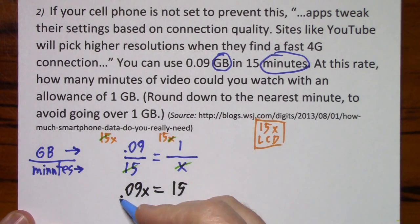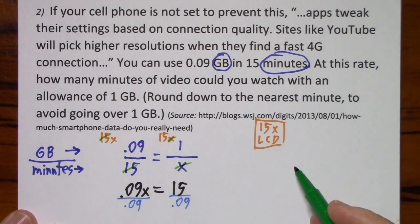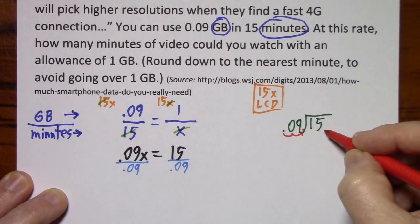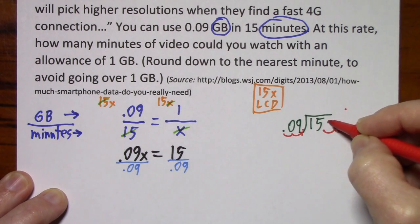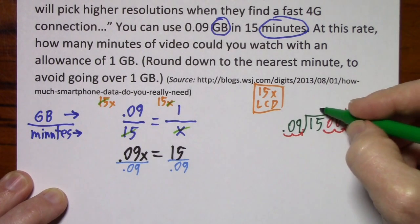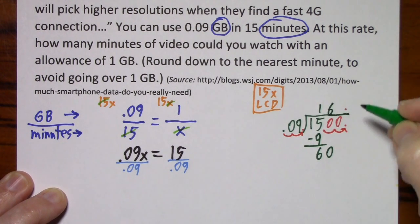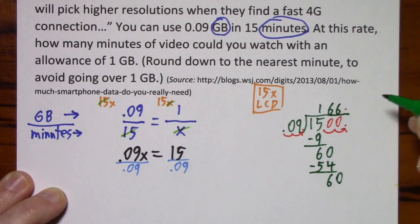You want X by itself, divide by 9 hundredths. Obviously those are going to cancel. We'll do this calculation off to the side. Of course move your decimal, put in the decimal and move it. You'll need some zeros to hold these two places. 9 goes into 15 once, 9 goes into 60 six times, 9 goes in there 6 times.